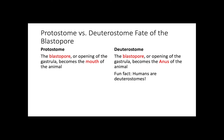The final major difference between protostomes and deuterostomes comes down to the fate of the blastopore. The blastopore is the opening of the gastrula. As discussed in previous videos, the gastrula is formed when the blastula — the ball of cells — folds in on itself in a process called gastrulation. So the blastopore is the opening of that gastrula that's been created. In protostomes, the blastopore becomes the mouth of the animal. In deuterostomes, the blastopore becomes the anus of the animal.